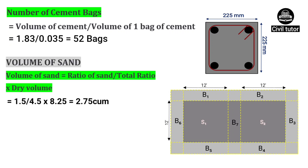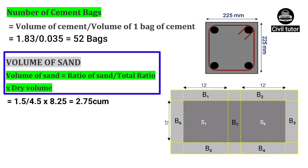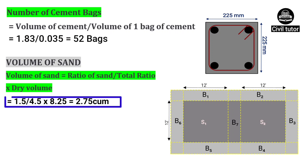Volume of sand is calculated using the formula: volume of sand equals ratio of sand upon total ratio, into dry volume. As the ratio of sand is 1.5, total ratio is 4.5, and dry volume is already calculated as 8.25. Hence the required volume of sand will be equal to 2.75 cubic meters.